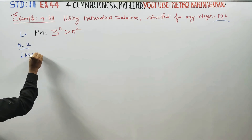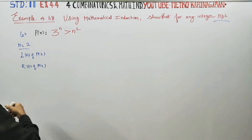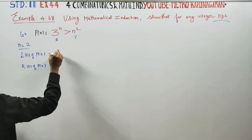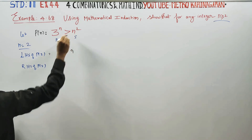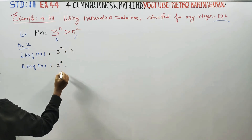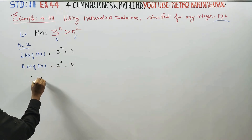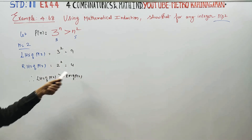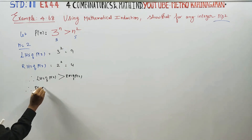Try LHS of P of 2. When n is equal to 2, you get 3 squared, which is 9. For RHS, n is equal to 2, so n squared gives 2 squared, which is 4. LHS of P of 2 is 9, which is greater than RHS of P of 2, which is 4. Therefore, P of 2 is true.